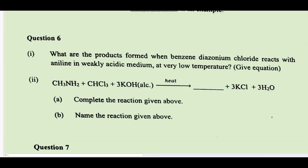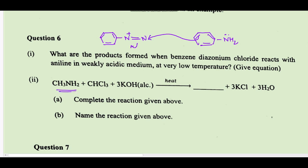For the products from benzene diazonium chloride reacting with aniline: aniline has higher electron density at the para position, so it attacks through para to form the coupling product. For methyl amine with CHCl₃ and potassium hydroxide, we can get CH₃NC — that is methyl isocyanide. This reaction is called the carbylamine reaction.